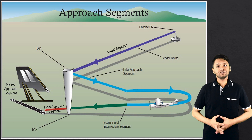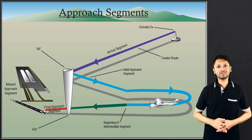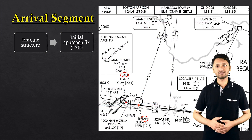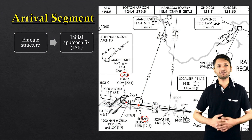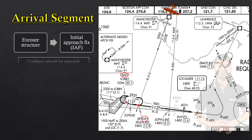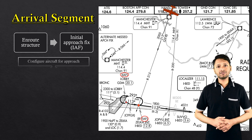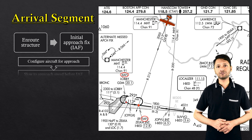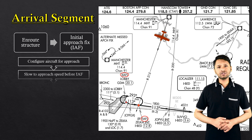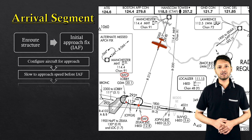The standard instrument approach can be dissected into different approach segments. The first segment is the arrival segment, which takes the pilot from the enroute structure to the initial approach fix. This is the segment where the aircraft can be configured for the imminent approach.